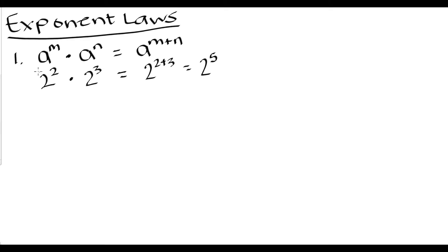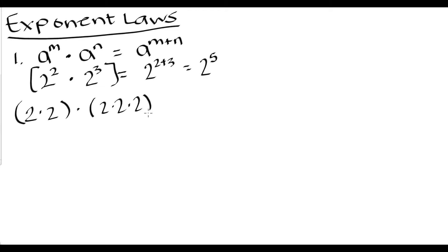This intuitively makes sense. Two squared is the same thing as 2 times 2, multiplied by 2 to the third power, which is 2 times 2 times 2. If we look at that, it's basically 2 times 2 times 2 times 2 times 2 — so we have 2 to the fifth power, which is the same result.